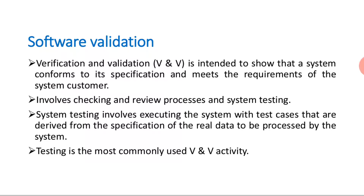In the first stage — software specification — the requirements are defined. There, we specify that the software has to perform like this, provide these functionalities and services to the end users. In the third stage, we run that software and validate whether it is going to provide all those services as expected by the customer. That process is known as verification and validation.